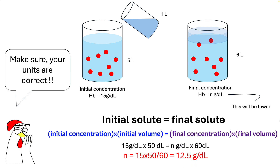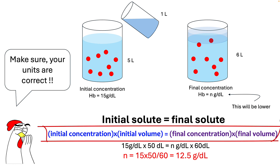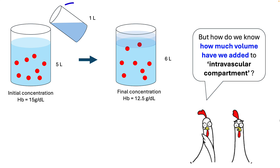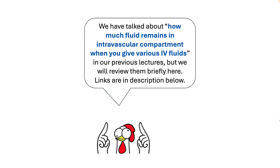Always note the units of measurement when performing such calculations. Since RBCs do not leak outside the vasculature, you can use this formula to calculate the degree of dilution if you know how much fluid you gave has remained intravascular. The only question we need to answer is the amount of fluid that you have added to the intravascular compartment. We have discussed how much fluid remains intravascular when you give various IV fluids in our previous lectures — please feel free to review those.